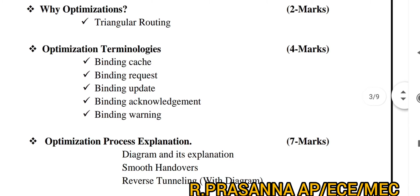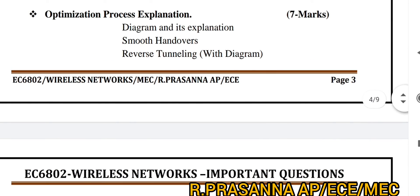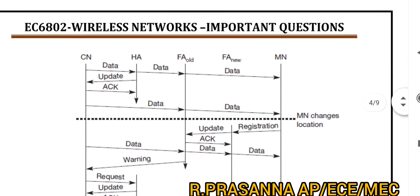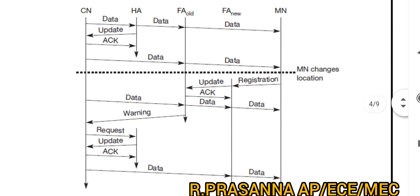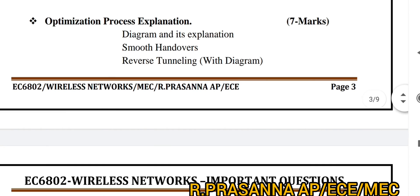Here we can see the optimization — what is the automation or optimization? This is where the routing system comes in. You can see the optimization system. Then you have to explain the process. If you have a diagram, you can explain it. Looking at the smooth handovers and reverse tunneling process — this is the diagram — if you explain this diagram, you will be able to understand what the optimization process is.